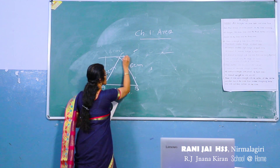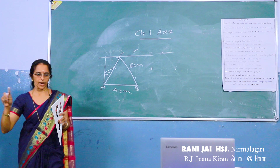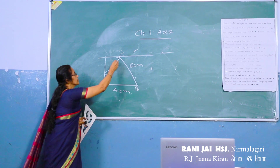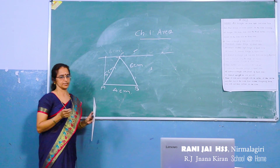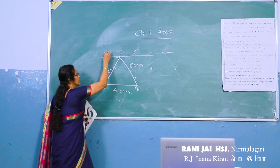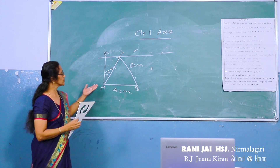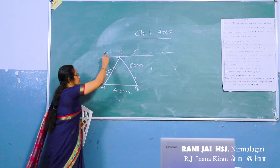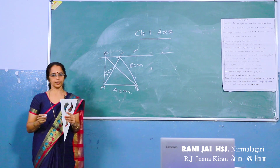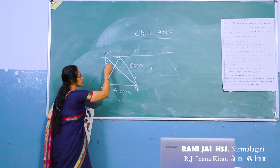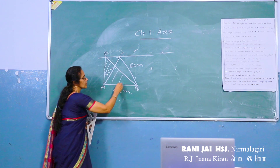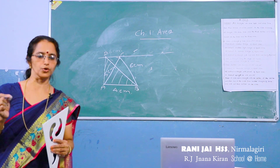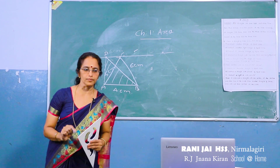Draw a parallel line through C using the set square and scale — it is the same method. You can see a meeting point, give it as D. Now join D to B — then we get triangle ABD. Triangle ABD is the new triangle equal in area to the given triangle ABC.